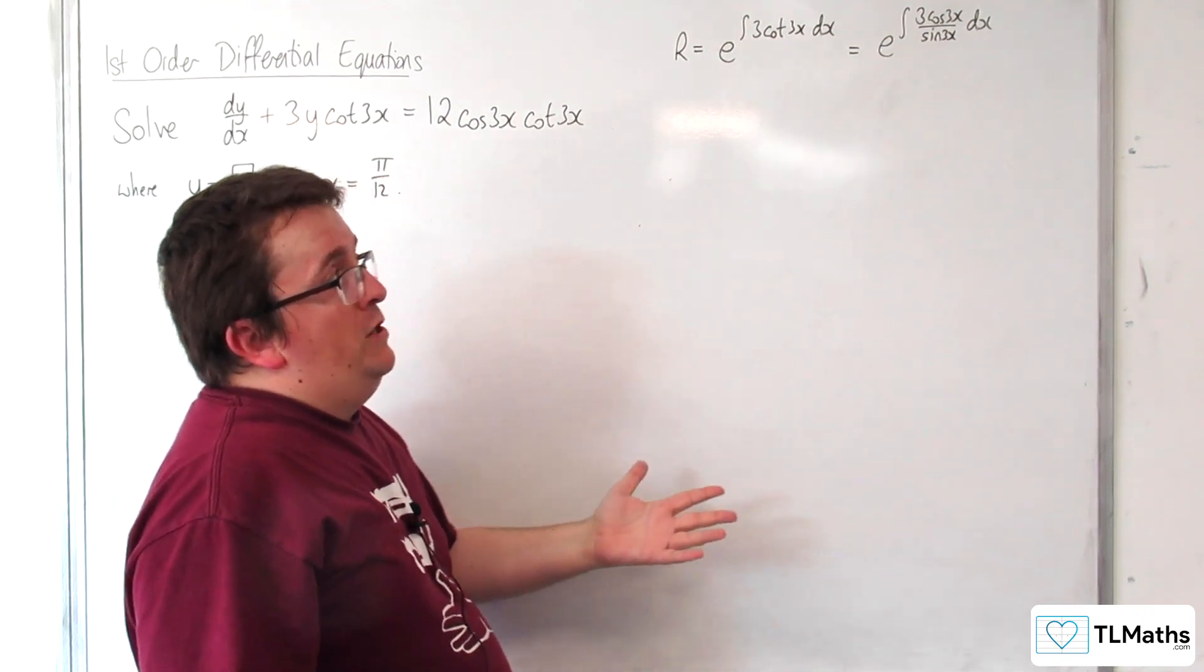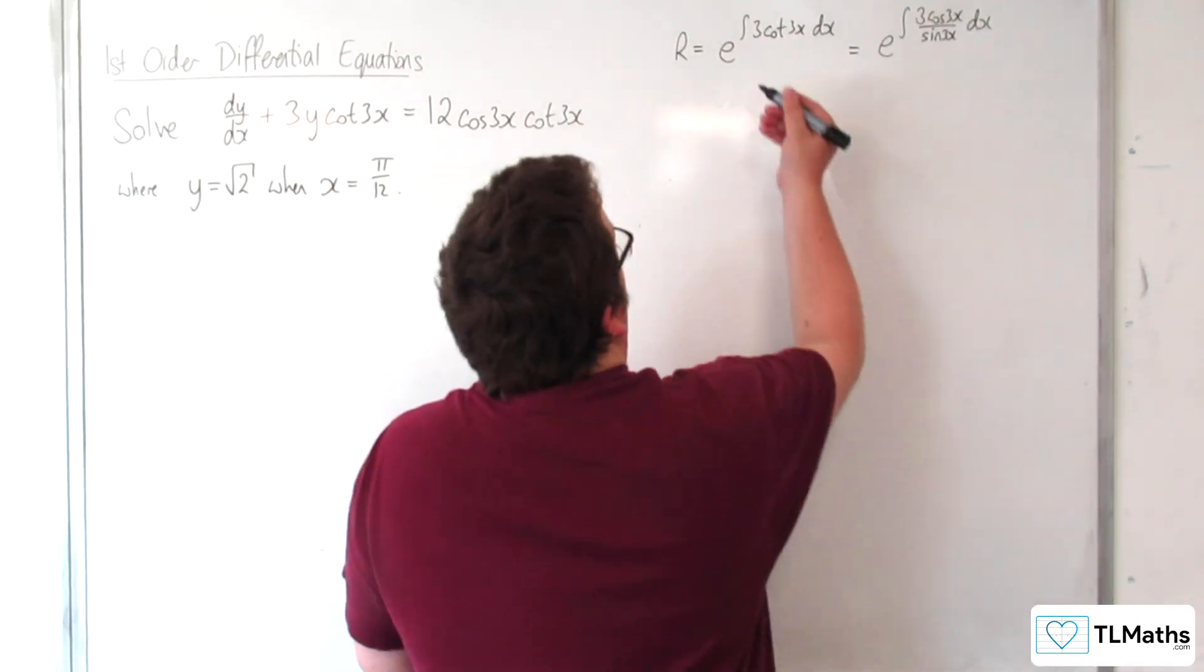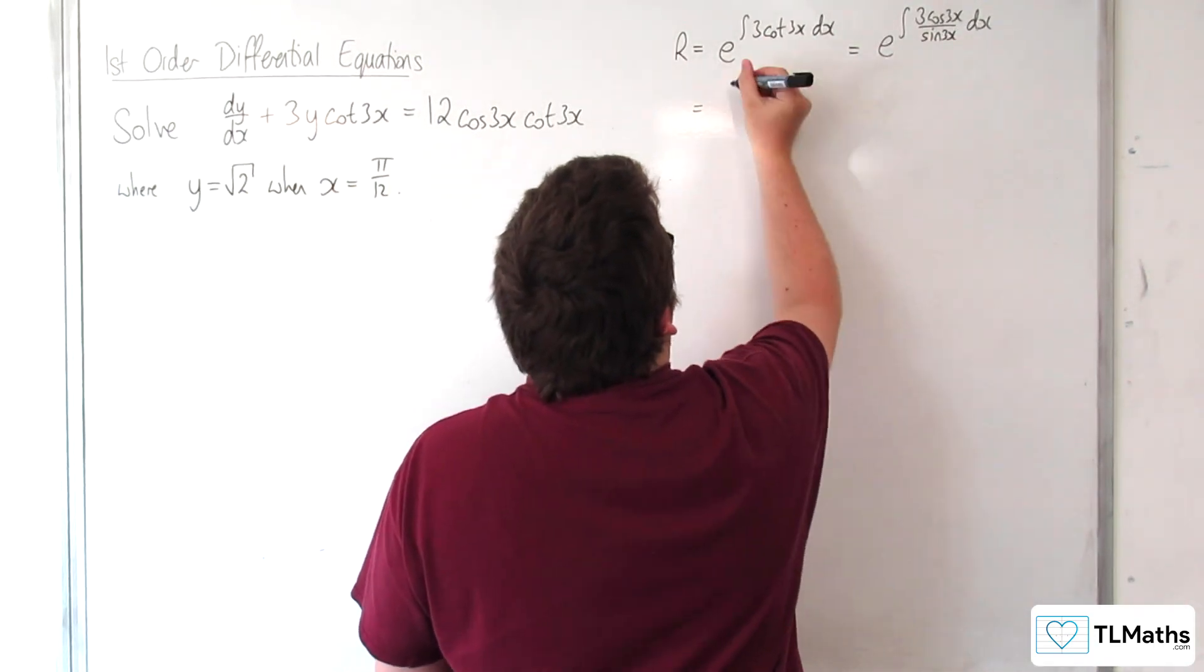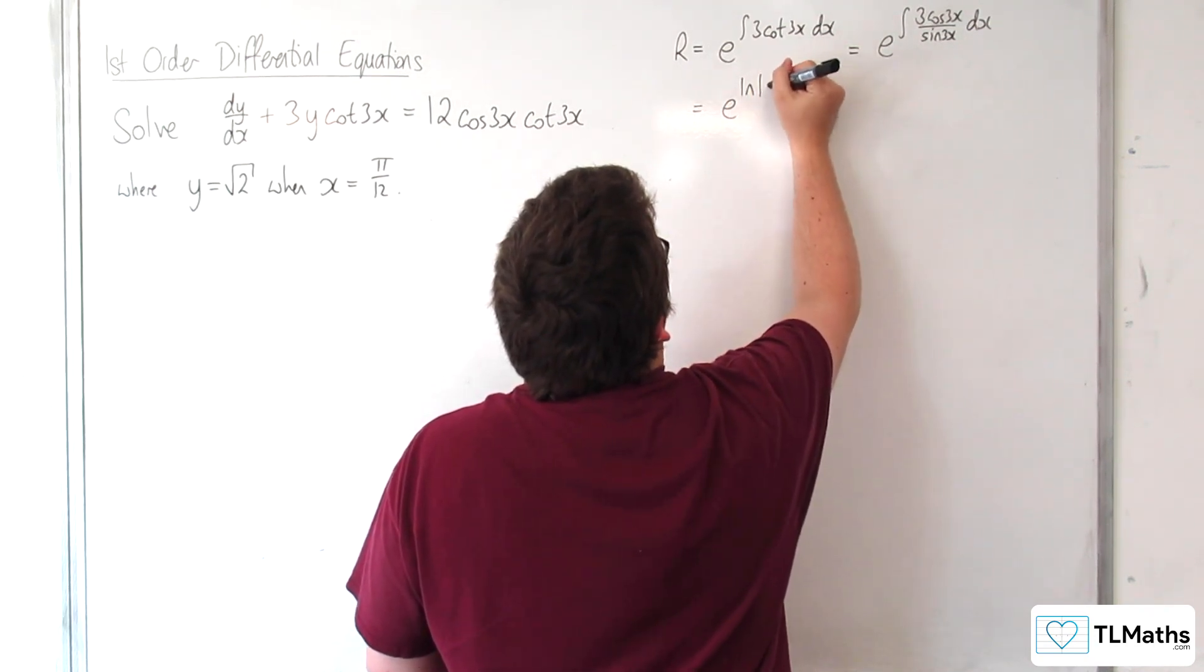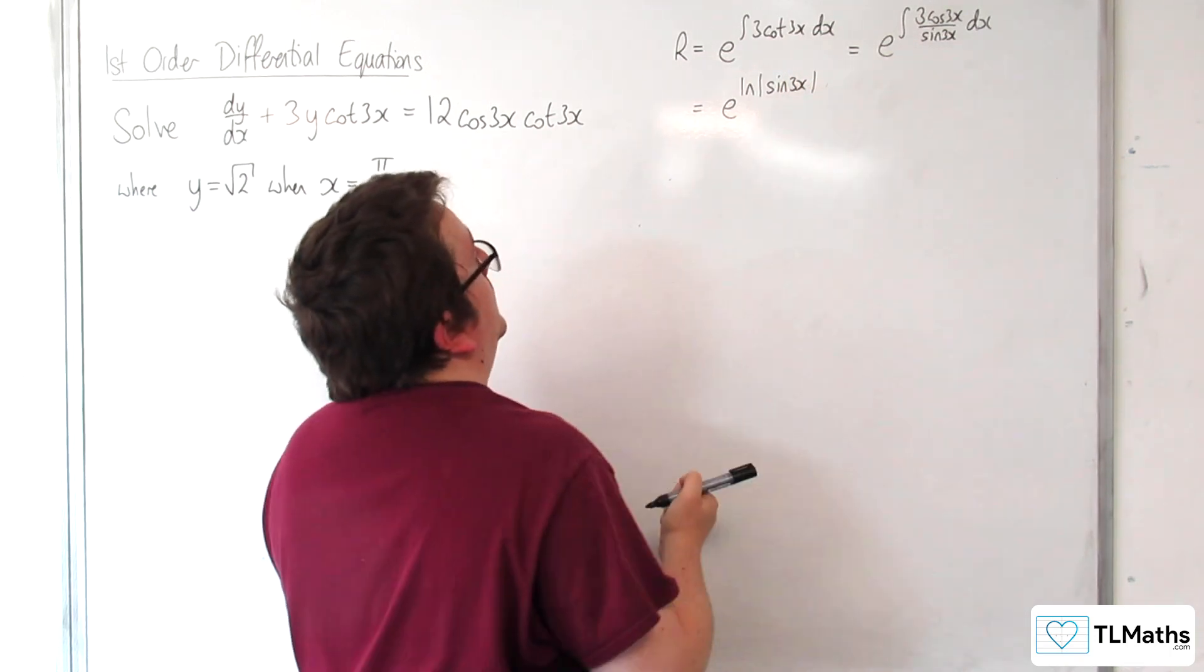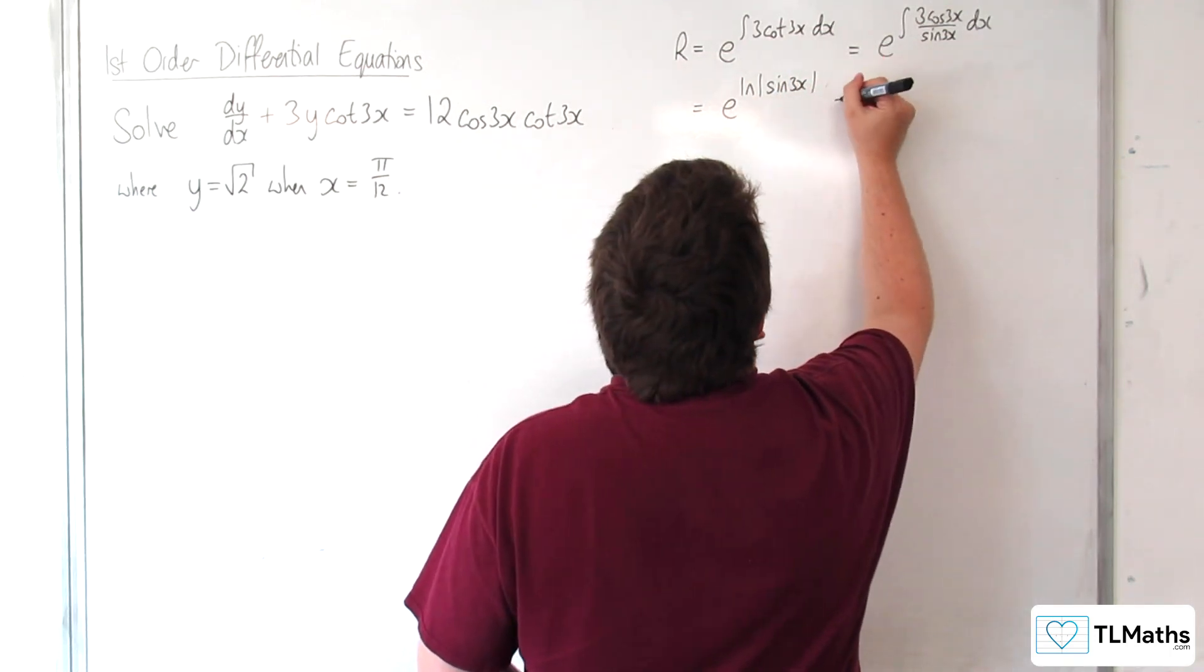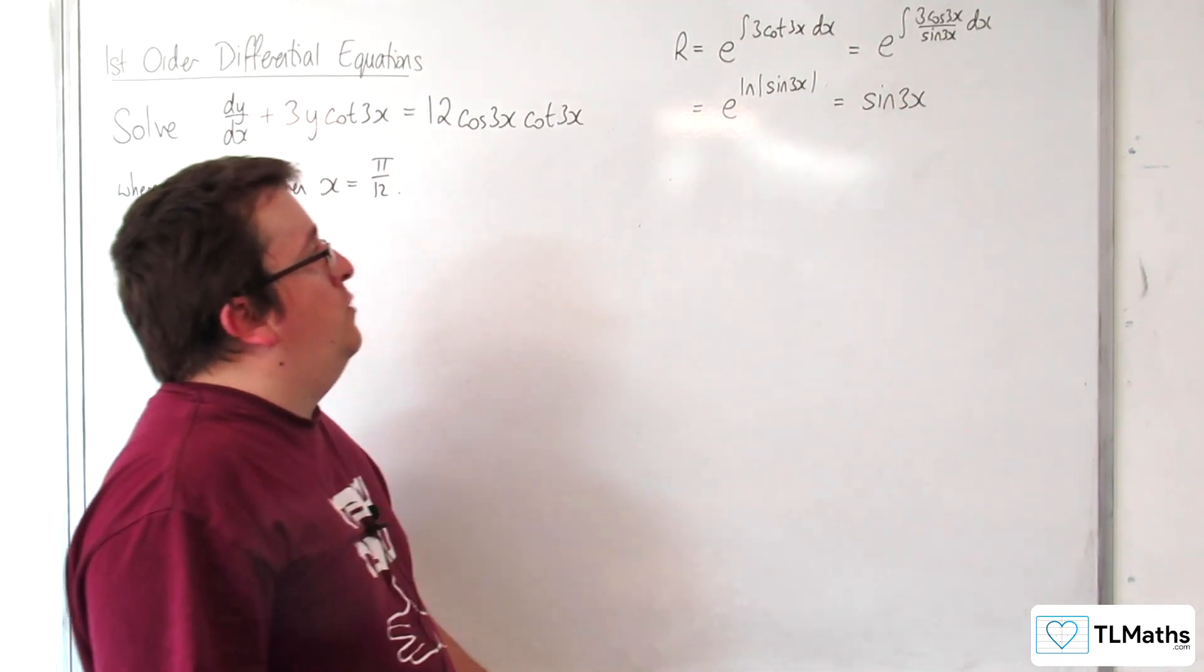Sine 3x differentiates to 3 cosine 3x. So the integral of this is just e to the log of sine 3x. The e and the log cancel, so we just get sine of 3x. That's our integrating factor.